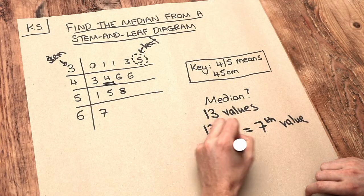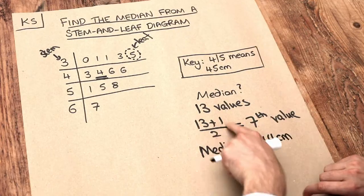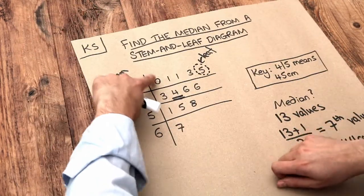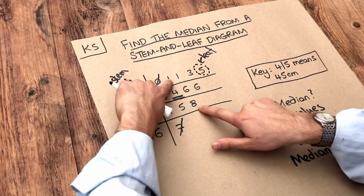If you don't like this method of trying to find where the middle value is, we can just count from the start and the end. So this is first value, last value, then move your way in.